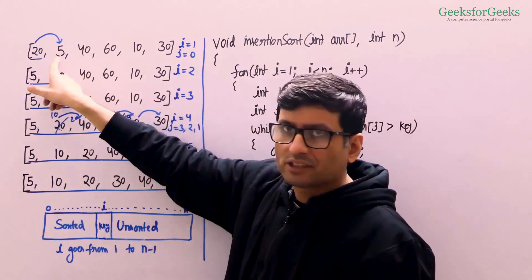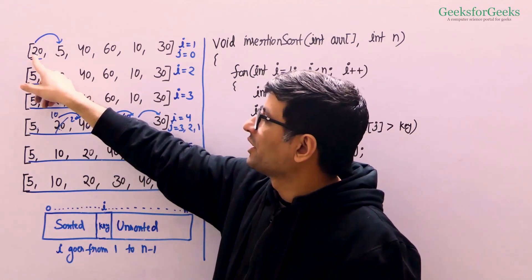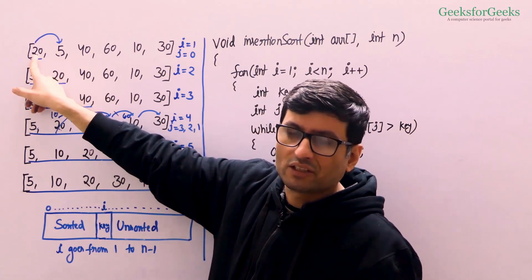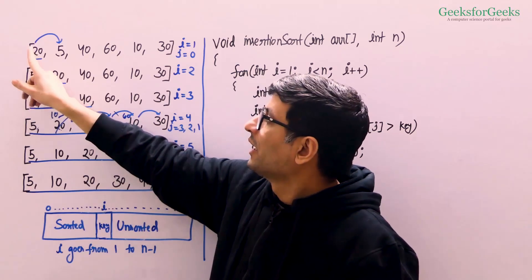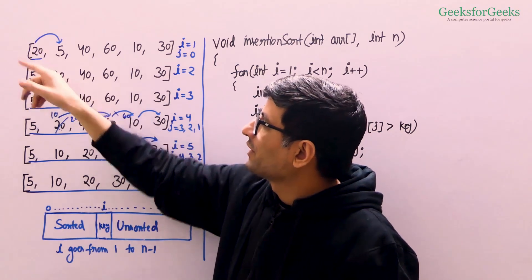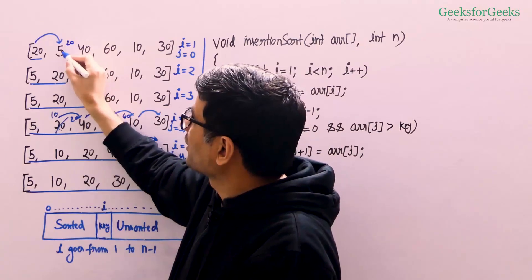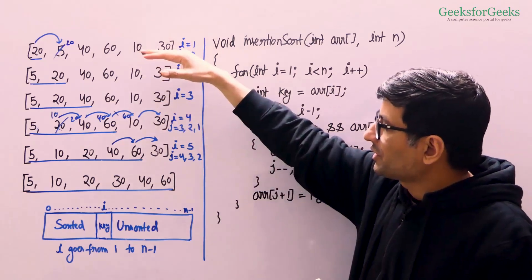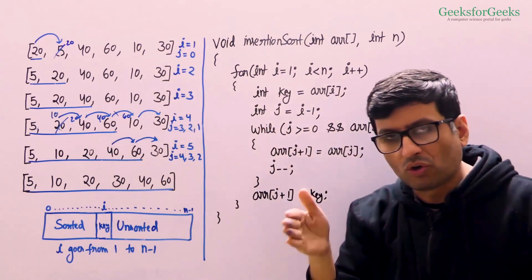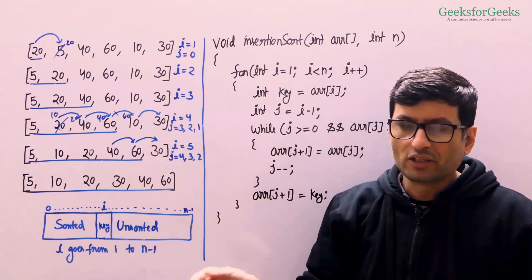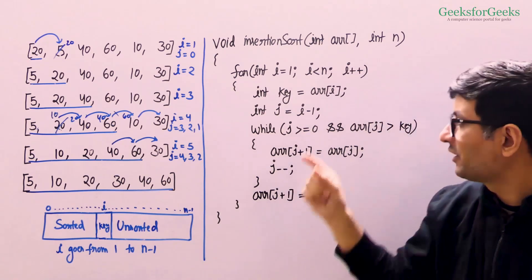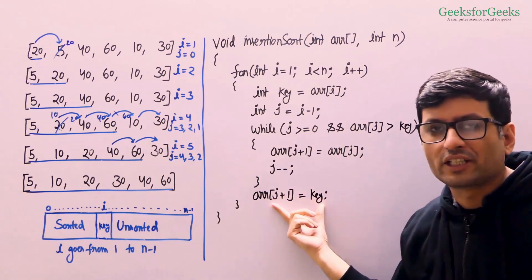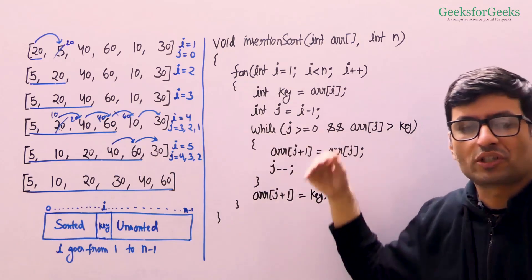The same logic applies when i was 1 with only one element — the loop runs once, j becomes -1, and we write 5 at arr[j+1]. The inner loop moves all greater elements one position ahead to create space for the key, and after the loop, we insert the key at the created space. This is how we sort the whole array. When arr[i] is already greater than the element to its left, we don't enter the inner loop, and the element simply overwrites itself.